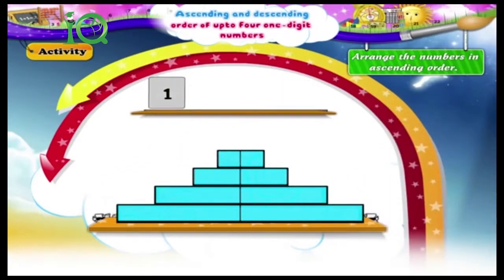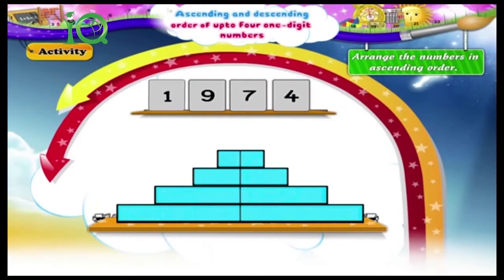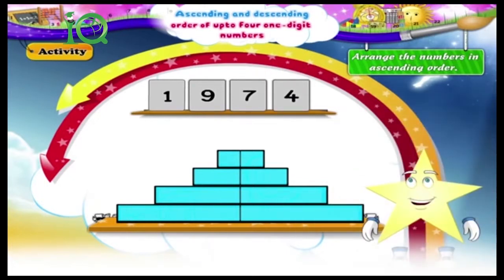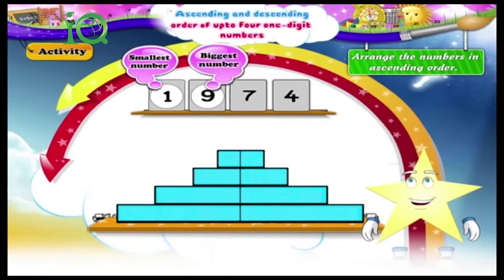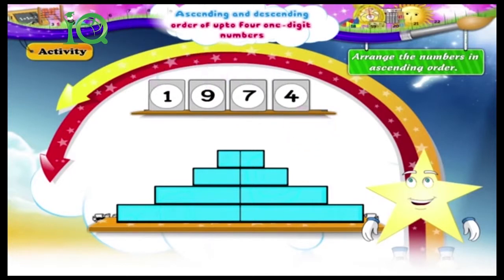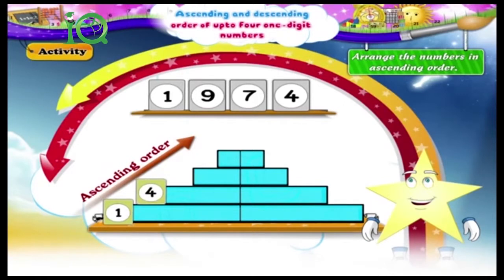One, nine, seven, four. The smallest number is one, the biggest number is nine. Between seven and four, four is the smaller number. The numbers in ascending order are one, four, seven, nine.